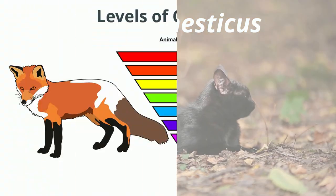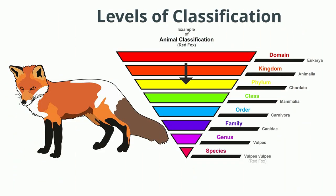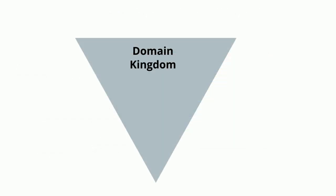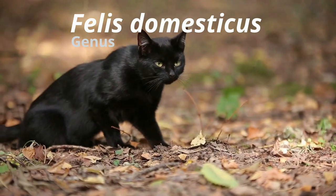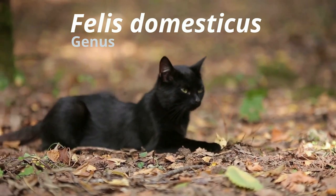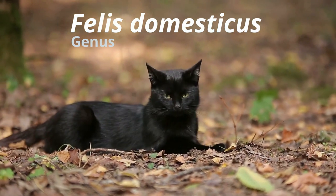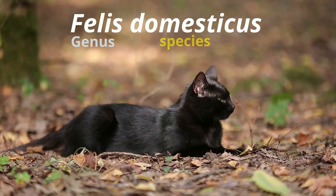All species that are thought to be most closely related are placed together in a genus. The levels of classification, moving from broadest to most specific, are domain, kingdom, phylum, class, order, family, genus, and species.